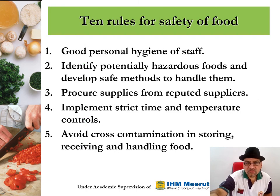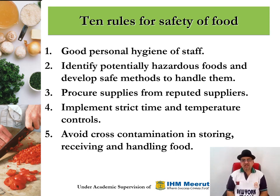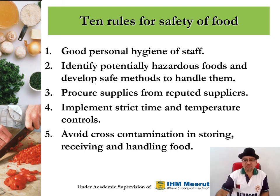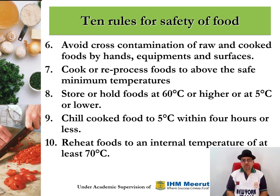Rules for safety of food: good personal hygiene of staff; identify potentially hazardous foods and develop safe methods to handle them; procure supplies from reputable suppliers; implement strict time and temperature controls; avoid cross-contamination in storing, receiving, and handling food; avoid cross-contamination of raw and cooked foods by hands, equipment, and surfaces; cook or re-process to safe minimum temperatures; store or hold foods at 60 degrees centigrade or higher, or at 5 degrees centigrade or lower; chill cooked foods to 5 degrees centigrade within 4 hours or less; and reheat foods to an internal temperature of at least 70 degrees centigrade.